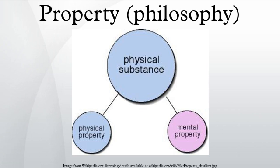Properties in predicates: the ontological fact that something has a property is typically represented in language by applying a predicate to a subject. However, taking any grammatical predicate whatsoever to be a property, or to have a corresponding property, leads to certain difficulties, such as Russell's paradox and the Grelling-Nelson paradox. Moreover, a real property can imply a host of true predicates — for instance, if x has the property of weighing more than 2 kilos, then the predicates 'weighs more than 1.9 kilos', 'weighs more than 1.8 kilos', etc., are all true of it.